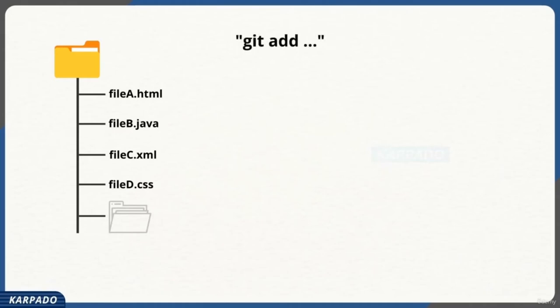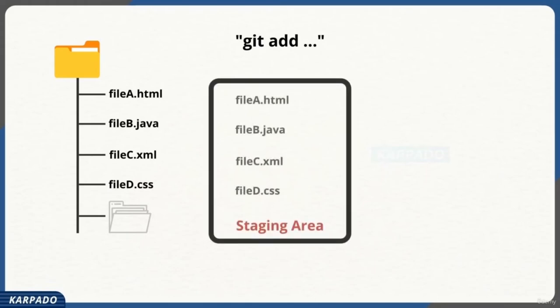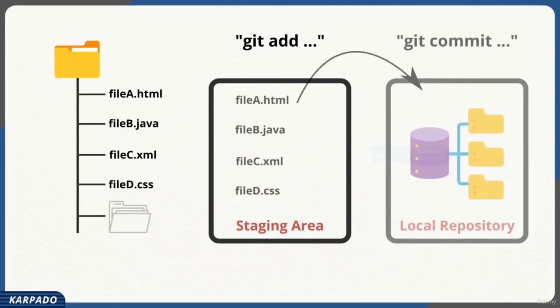Currently, all files in your working directory are not tracked by Git — you need to explicitly tell Git what files you want it to track using the command 'git add.' You mention all the files: file A, file B, file C, file D. Running this command copies those files into the staging area, and this is when Git starts tracking them. Once staged, you use 'git commit' to commit all the changes to a local repository — sometimes called the object database.